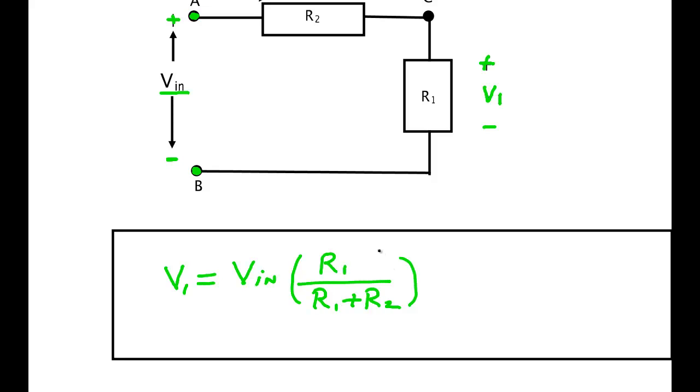R1 over (R1 plus R2) is a fraction, so you're going to get a fraction of the input voltage. The bigger R1, the greater the fraction. If R1 is much greater than R2 so this can basically be ignored, then you get R1 over R1—you get all of it. If R1 is half the resistance, in other words if it's the same as R2, then fifty percent of the voltage will be dropped across R1 and the other fifty percent across R2.